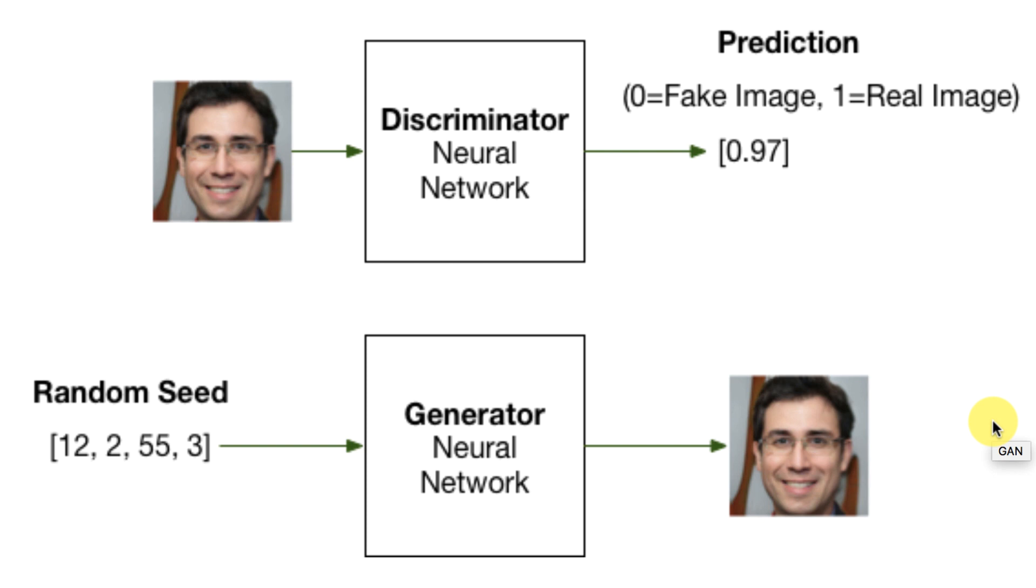First, let's look at how we train the generator. Because it's a little bit more simple than the discriminator. What is important about training both of these is notice I show weights trained, weights static. Both of the neural networks need to be in place to train either one. But, you cannot update the weights on both.